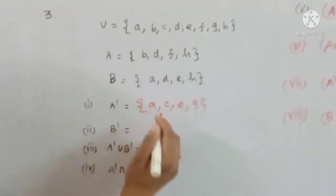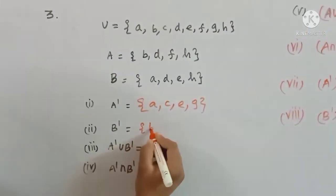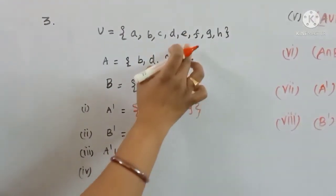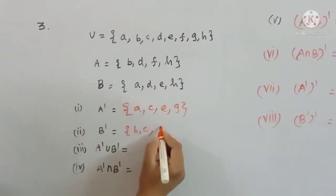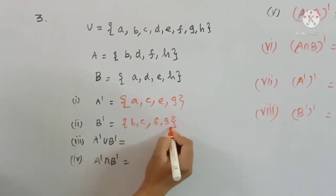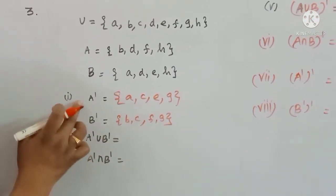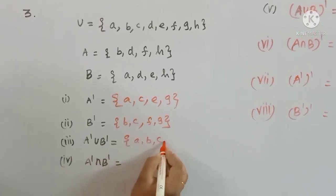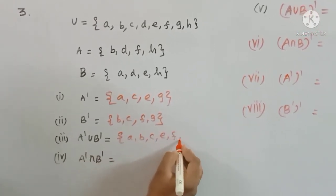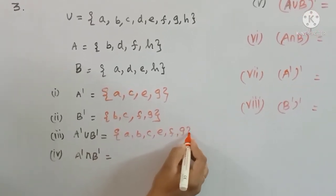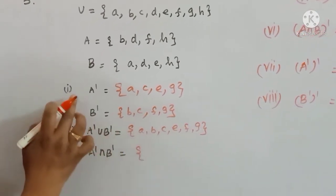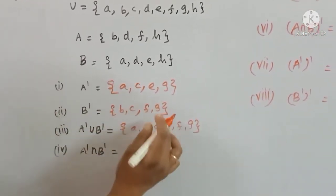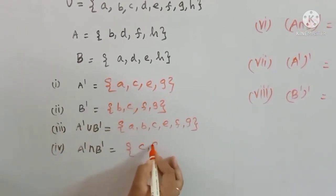B dash means B complement. A dash intersection B dash is a common part. The two common elements are C and G.